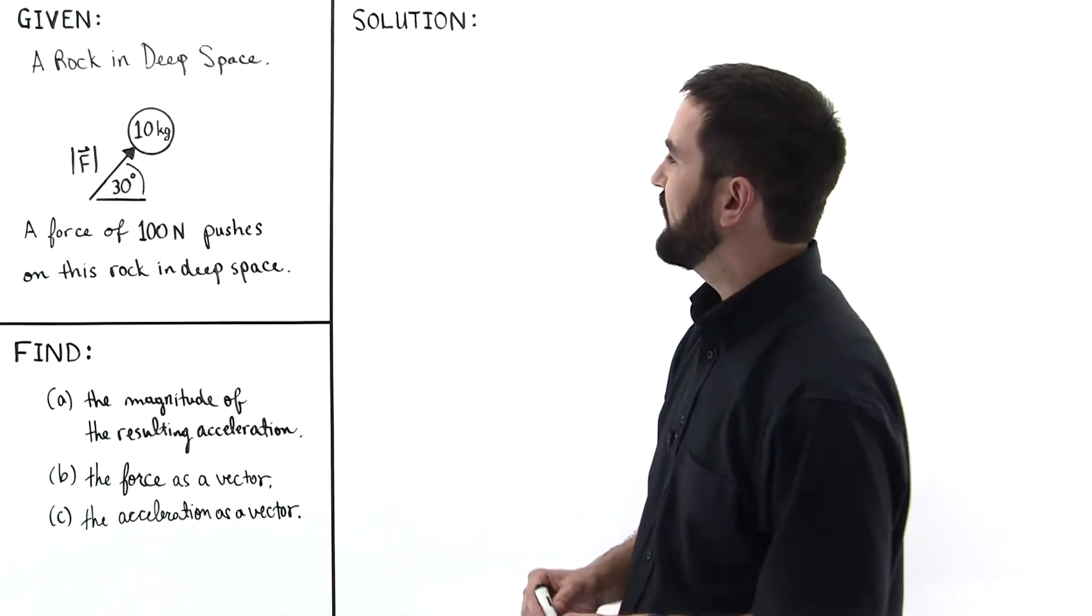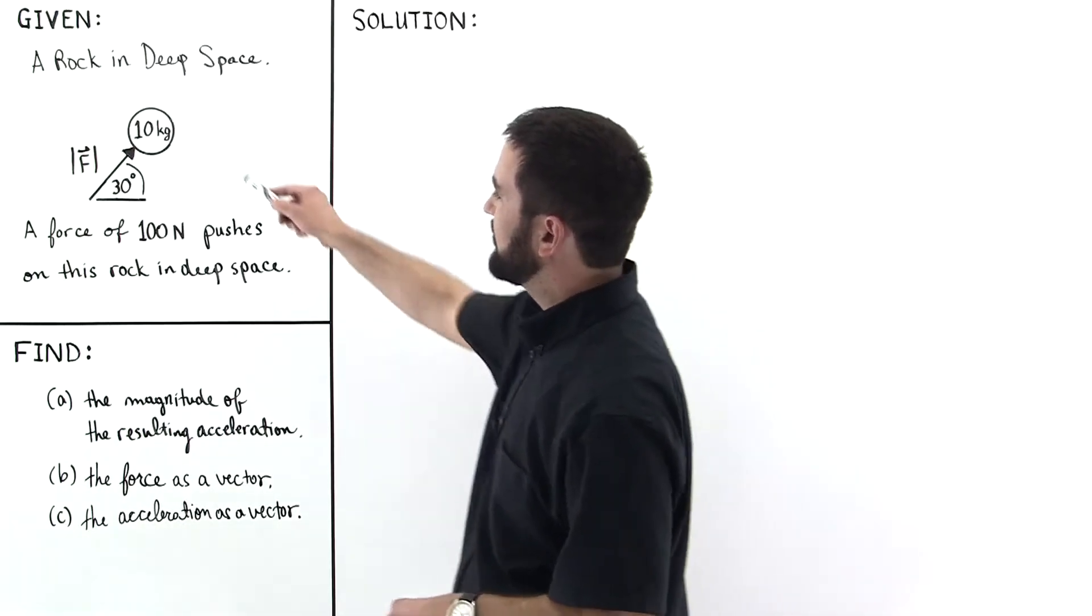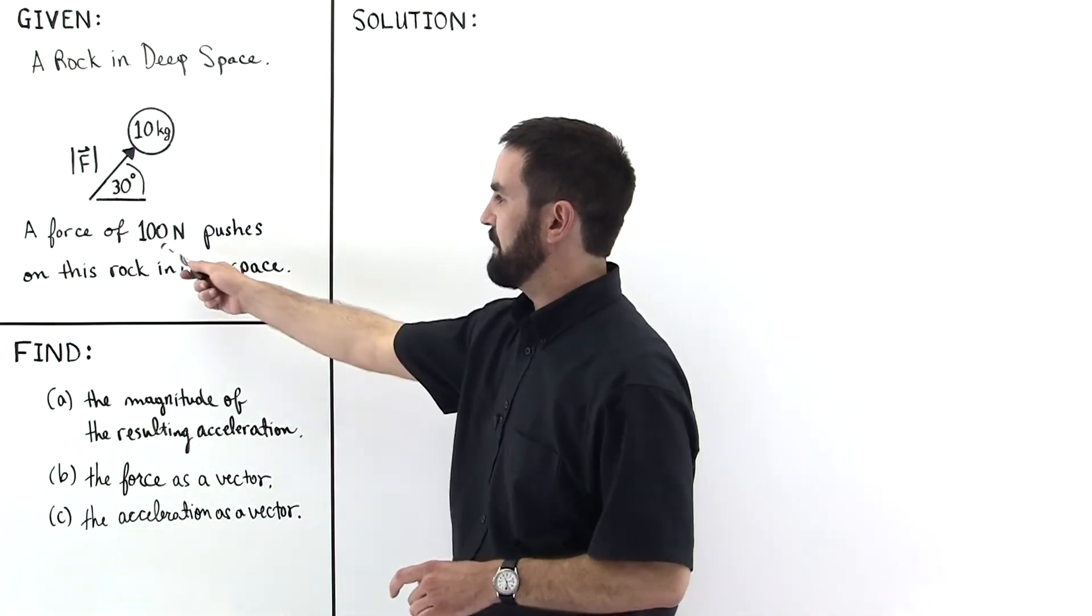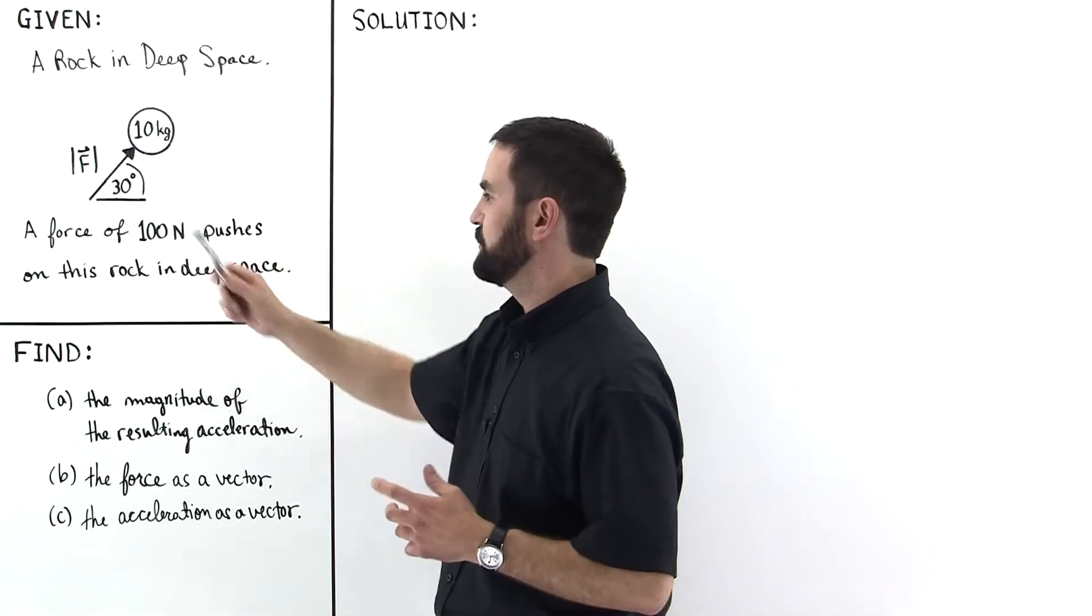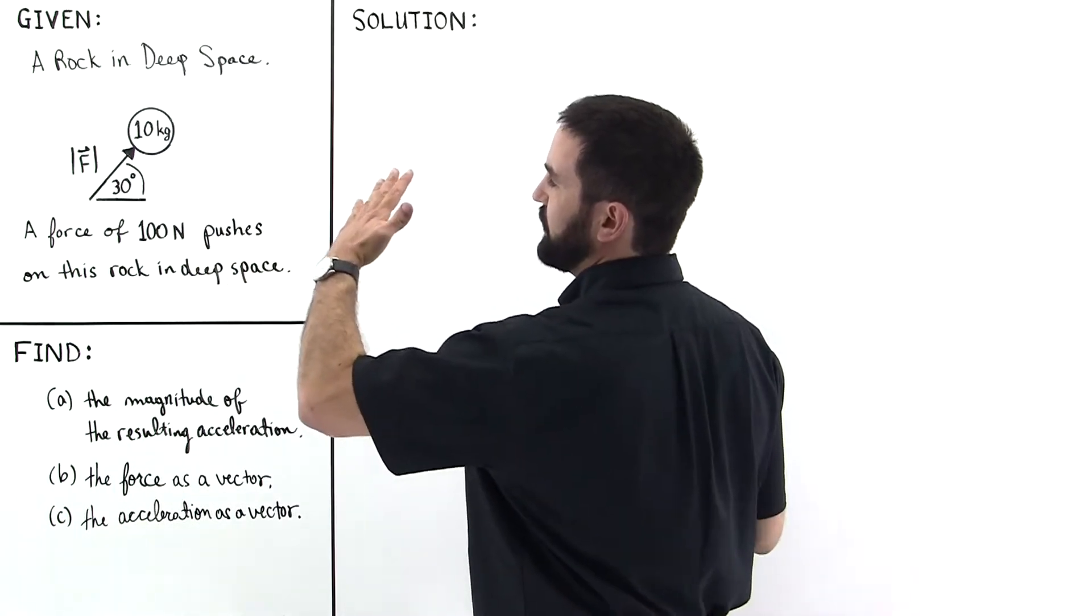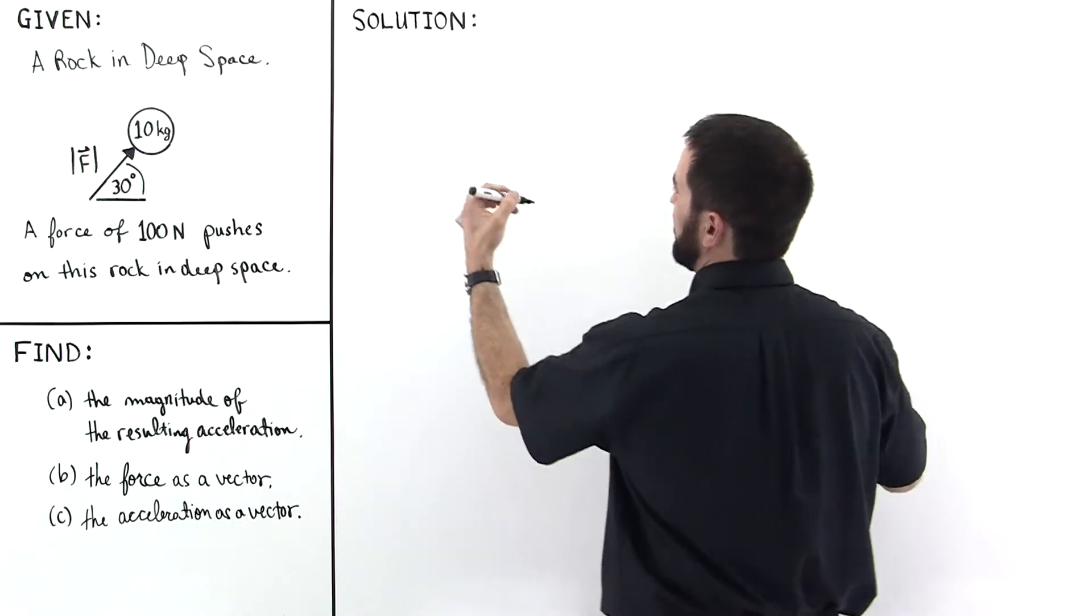We're given a rock in deep space of 10 kilograms, is being pushed on with a force of, the magnitude of the force is 100 newtons, and is pushing on it at an angle of 30 degrees to the ecliptic plane.